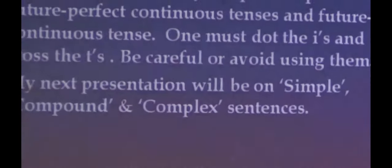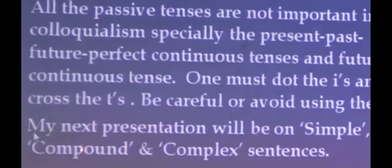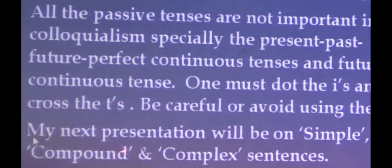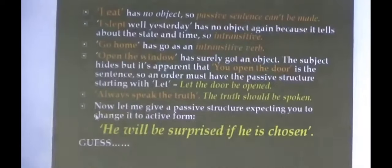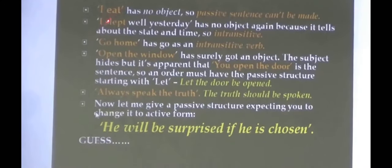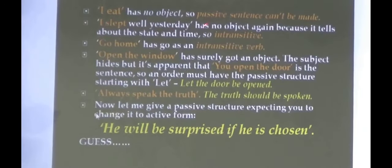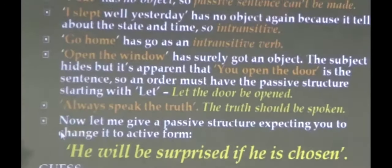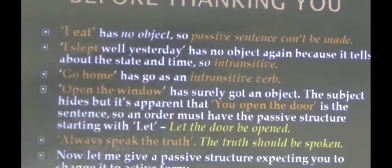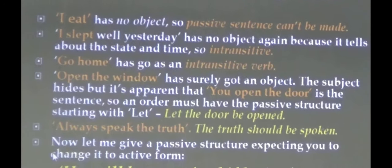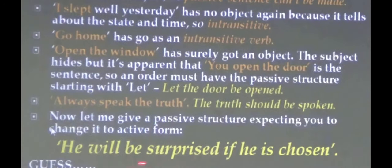To summarize: in present and past tense, remember that the perfect continuous form is to be avoided in passive. In future, there are two forms to avoid: future continuous and future perfect continuous. When I upload this, you can see it clearly. Note: 'I eat' has no object, so passive structure is not possible.